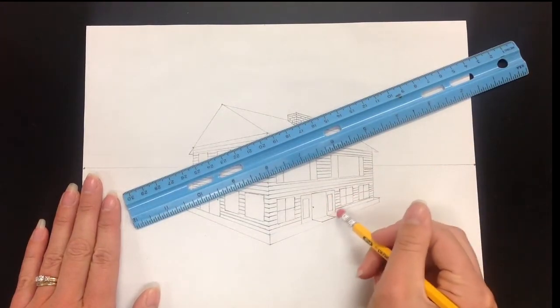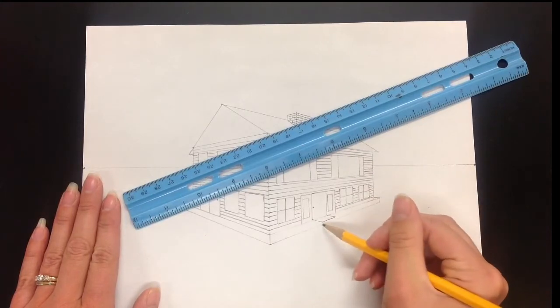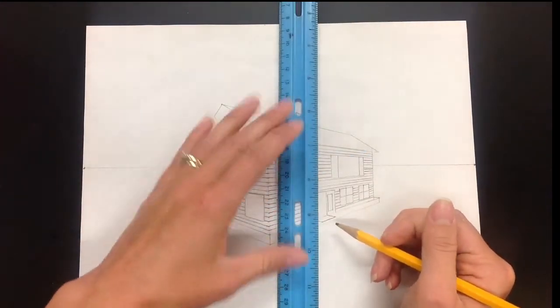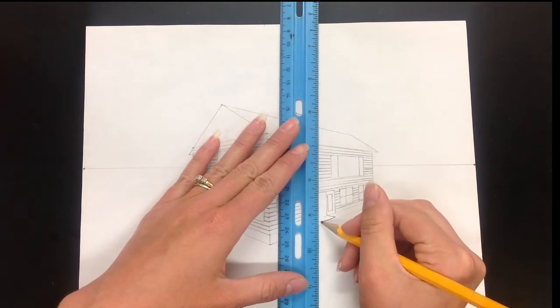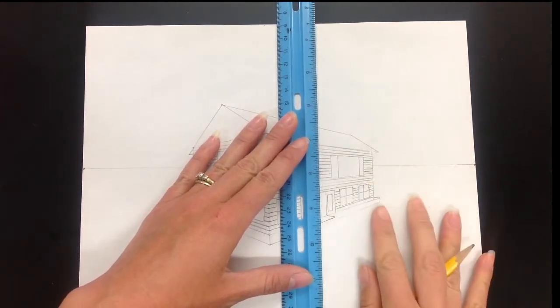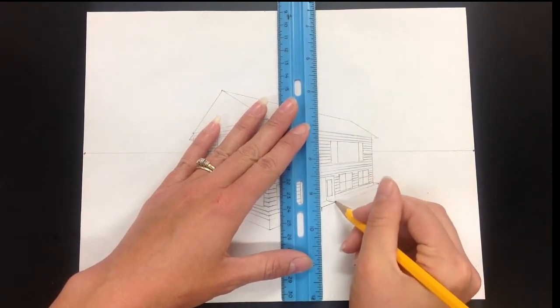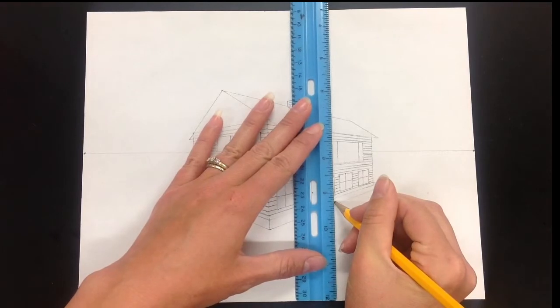Right now I have what's kind of looking like a doormat, and I need to give that stair some elevation. So I'm going to create two vertical lines that come straight down. I'm going to match up the edge of the ruler with the edge of the paper right there. I'm going to bring that corner line down and go over to the other side.